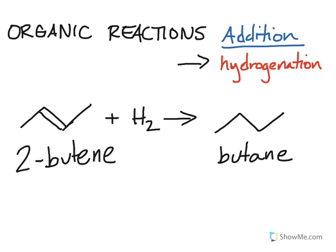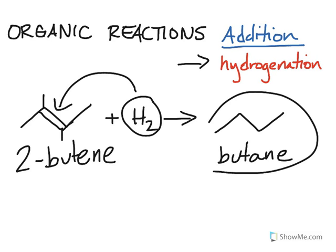So what hydrogenation does is it adds the hydrogen atoms to the double bond right here, adding one extra hydrogen there and one extra hydrogen there to break the double bond apart to make a saturated hydrocarbon.